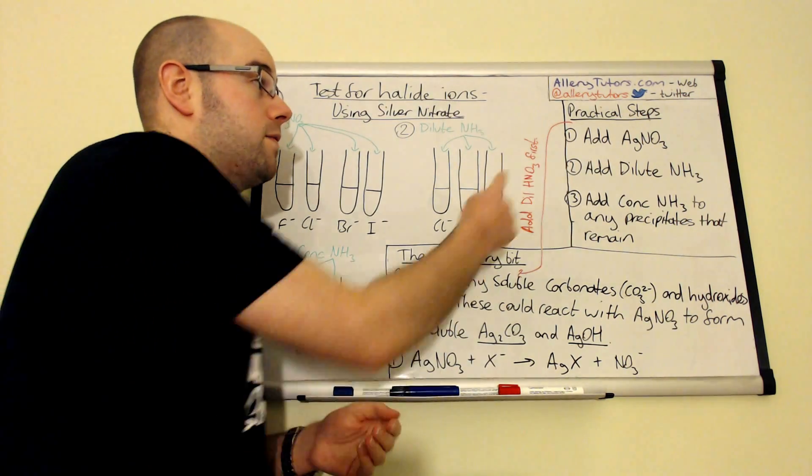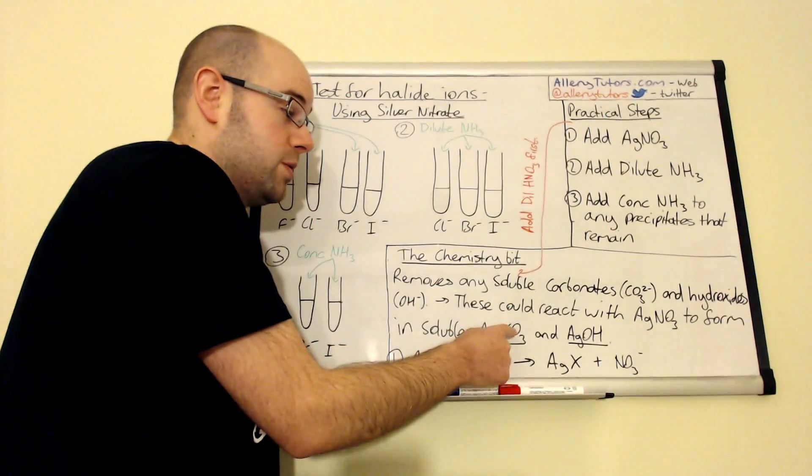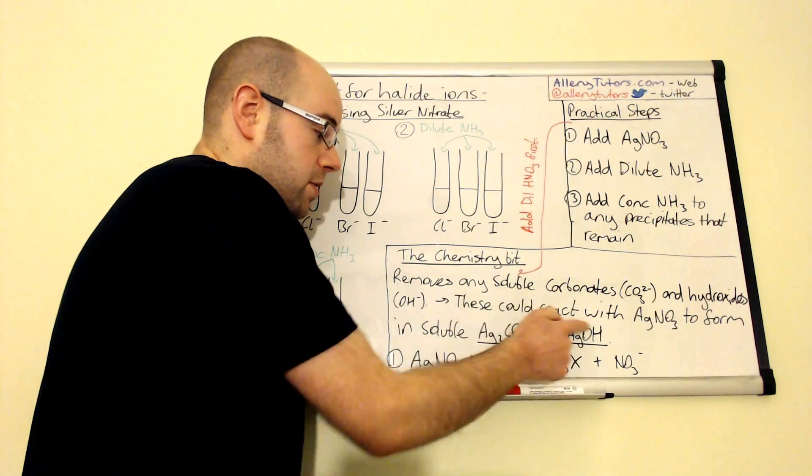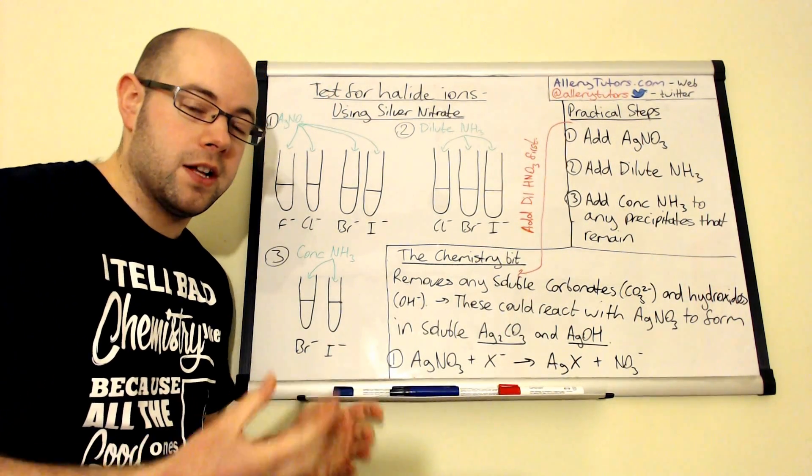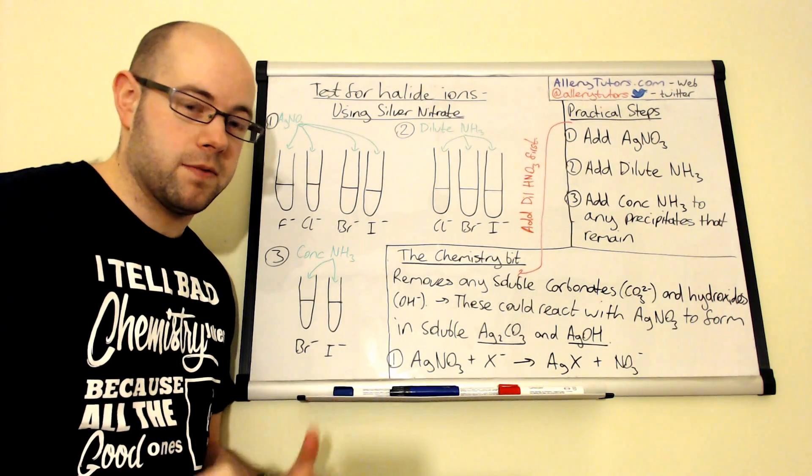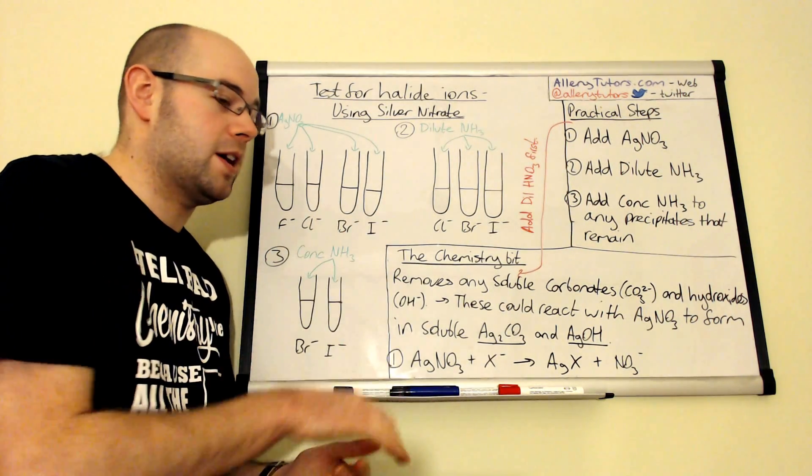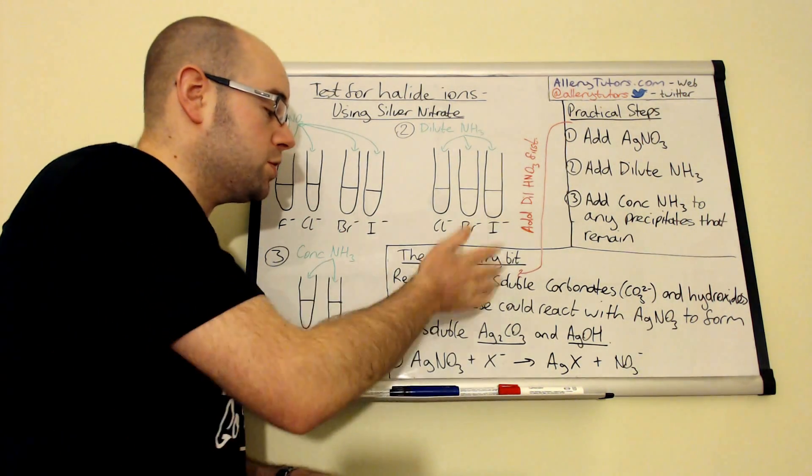If the silver nitrate did react with your carbonates and hydroxides, they would form these two compounds here, which is silver carbonate and silver hydroxide. They are insoluble and they'll precipitate out and they'll give you a false result as well, as you'll find out in a minute. Once we've added that in there, we then add our silver nitrate.